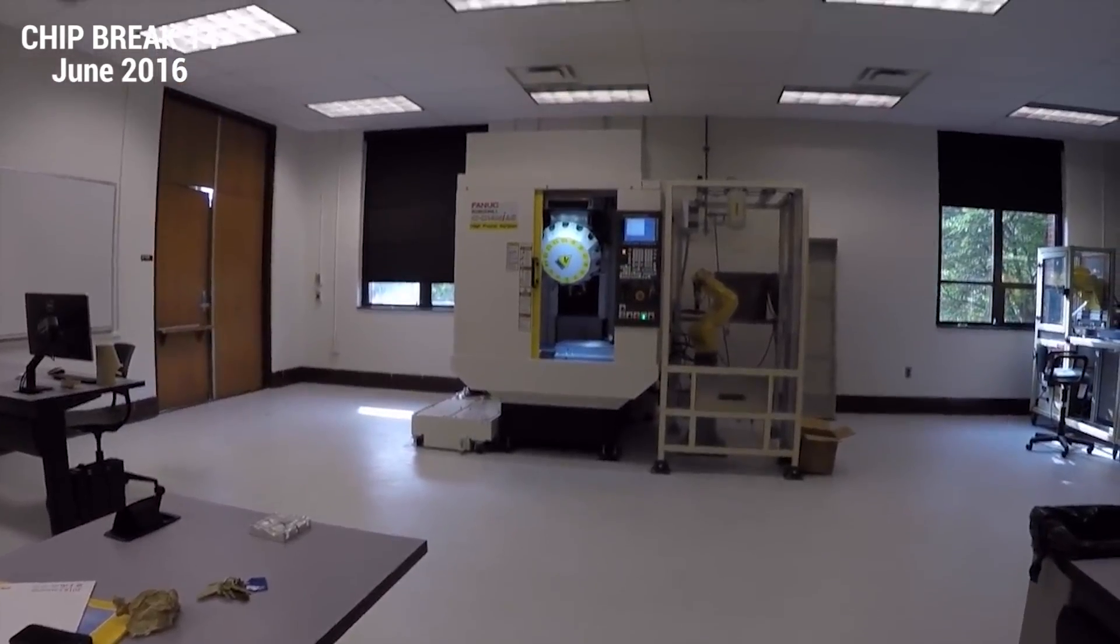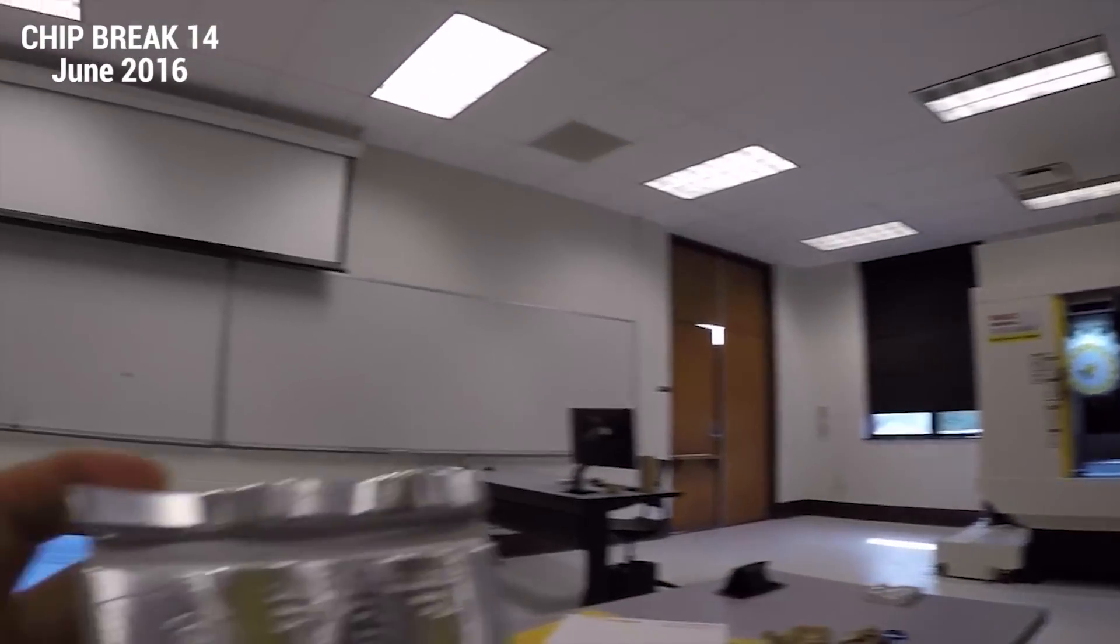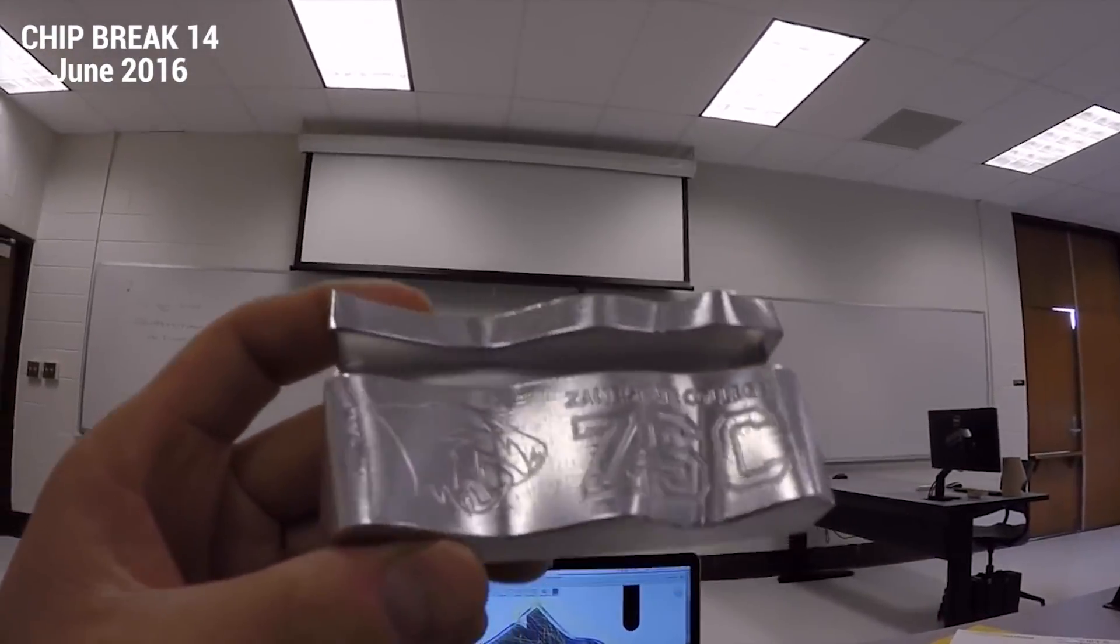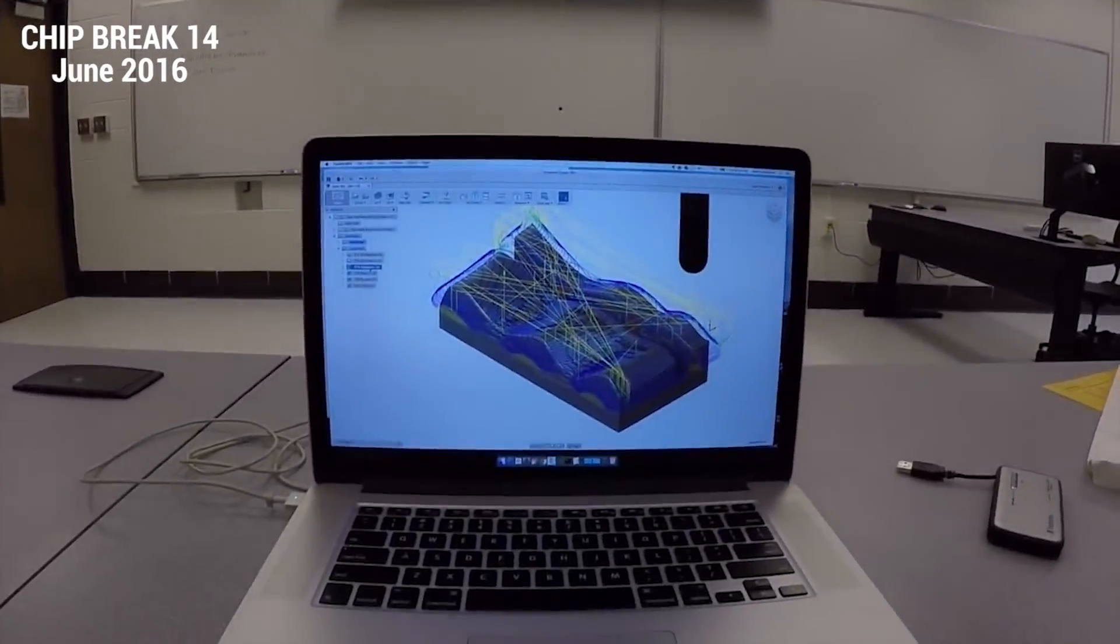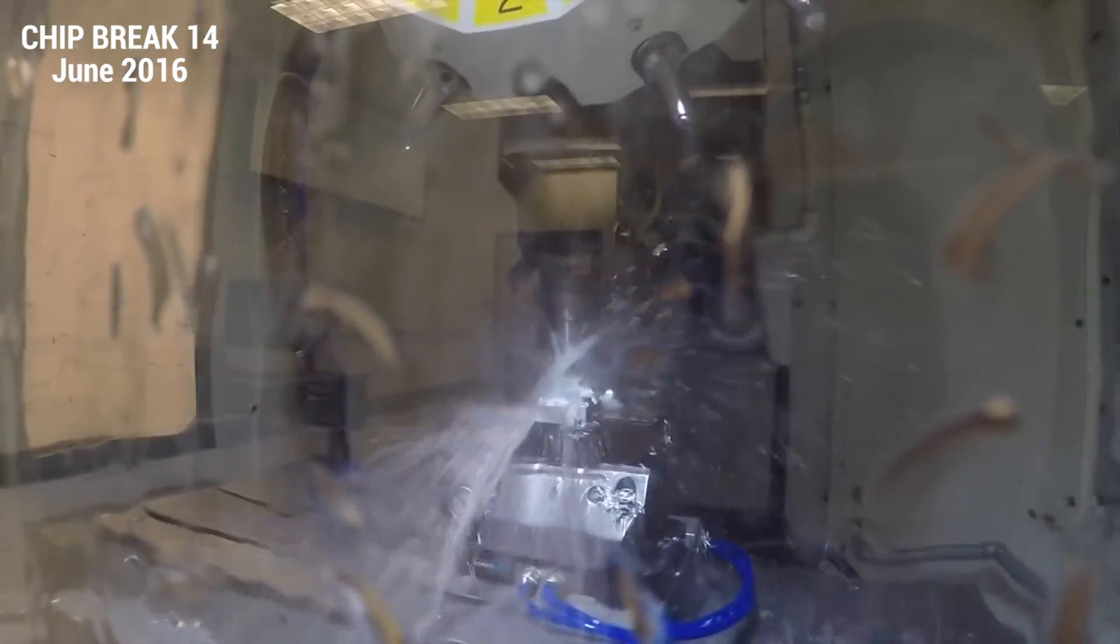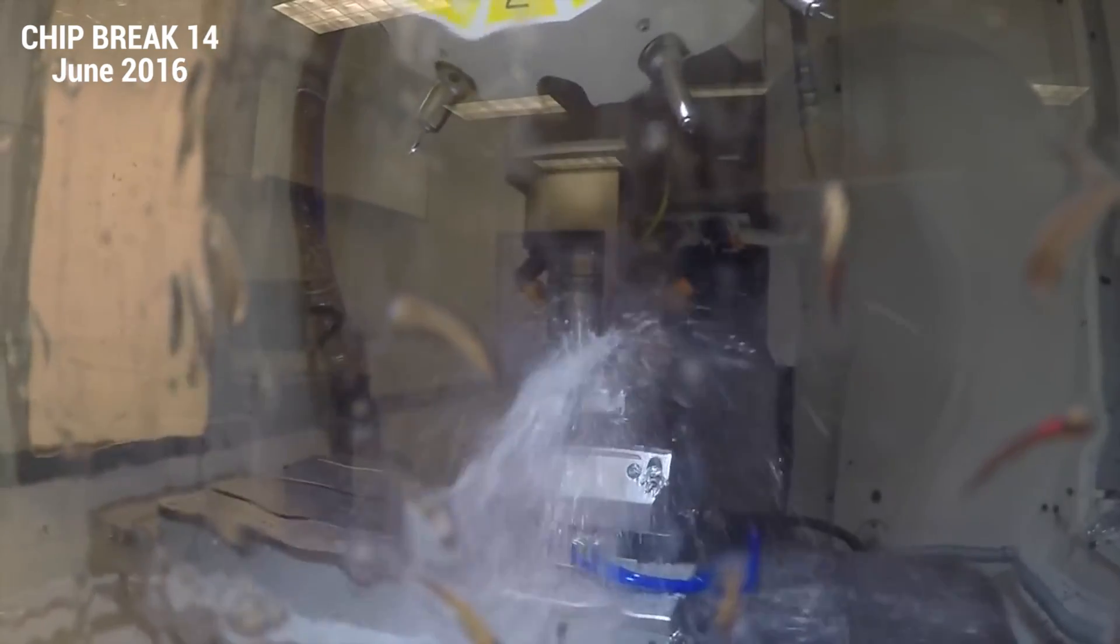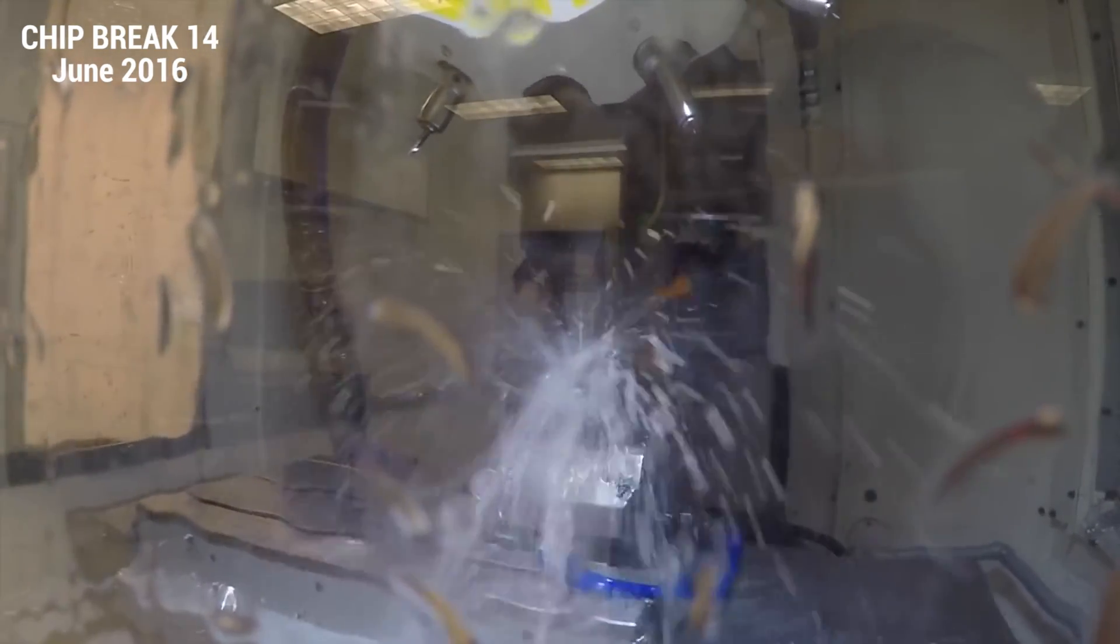This machine came from a local trade school who bought it for their robotics program and found out that it's probably a little bit too much machine for beginners just starting out running a machine with rapid speeds of 2,125 inches a minute on all three axes. Things can go wrong very, very fast.